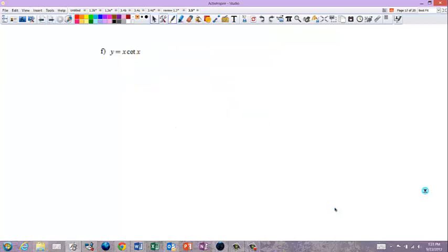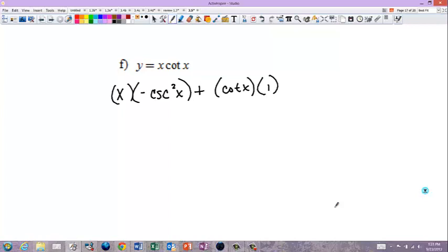And the last one is a product rule. The derivative of cotan is negative cosecant cotangent. Nope. No, it's not. It's negative cosecant squared. So, one D2 plus two D1. And you can leave it like that.